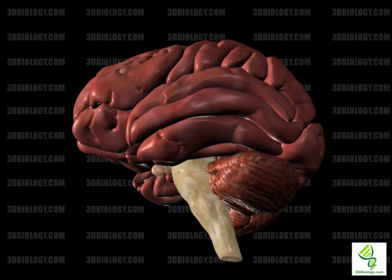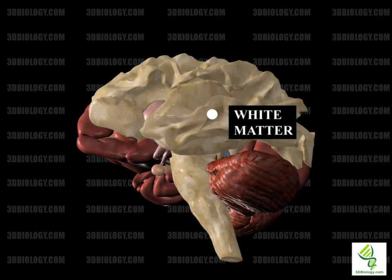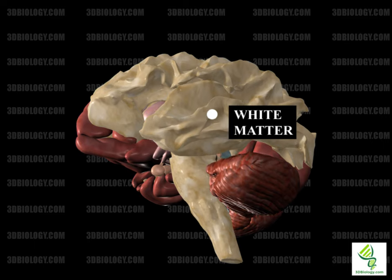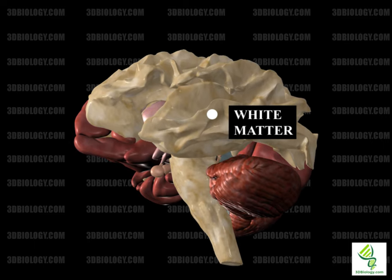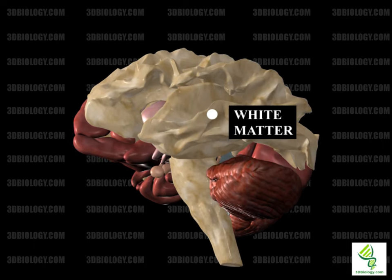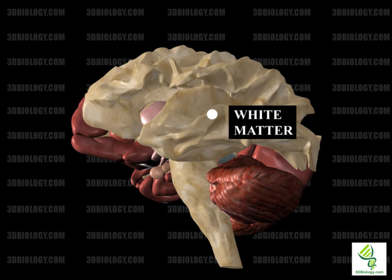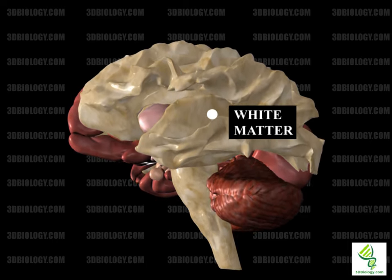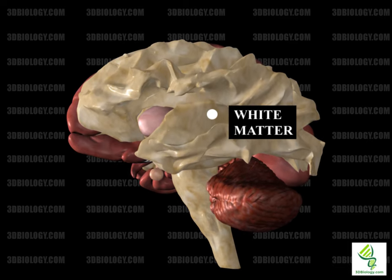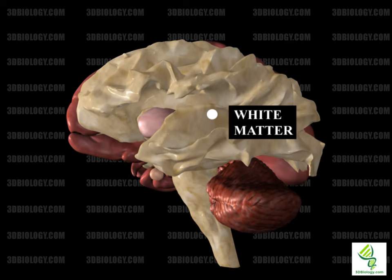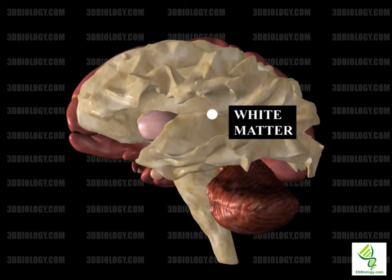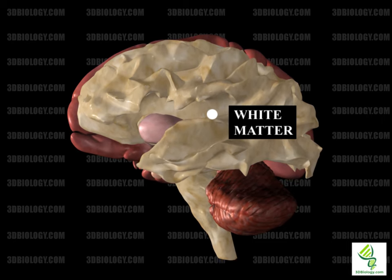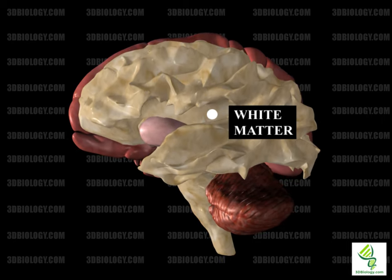The white matter is found deep in the brain including the cerebellum and superficially in the spinal cord. White matter is made up of axon bundles that connect gray matter areas. Within the white matter, one can find gray matter nuclei like brainstem nuclei in the basal ganglia. The name comes from the color of fatty myelinated axons.